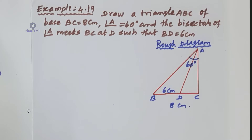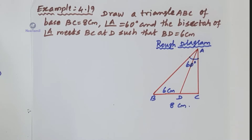The concept is construction of triangle. In the construction of triangle, we have the angle bisector concept. We have a base length, vertical angle, and the point on the base where the bisector of the vertical angle meets the base. In the measurements, we have the triangle construction concept.